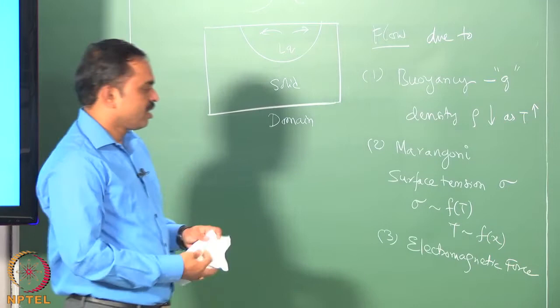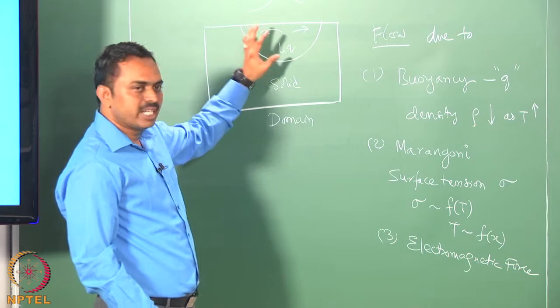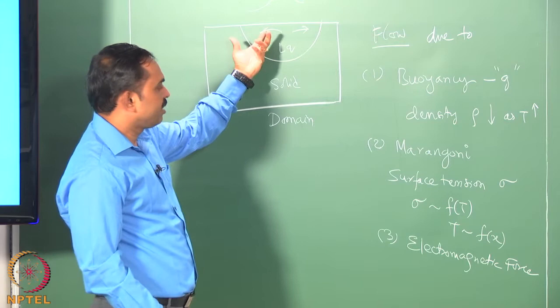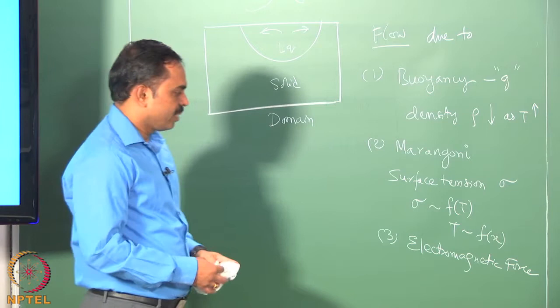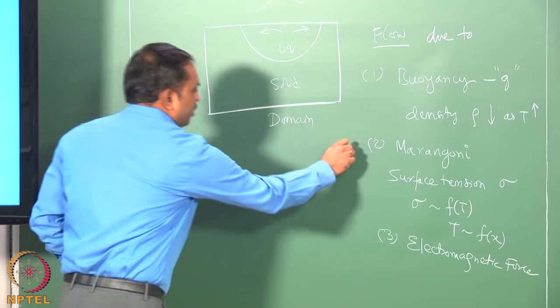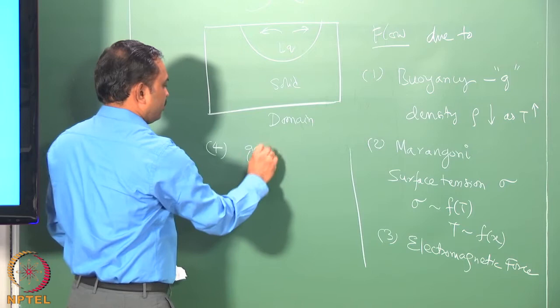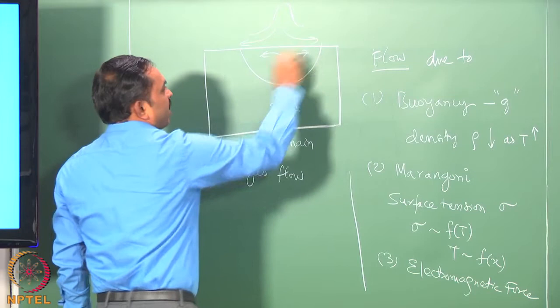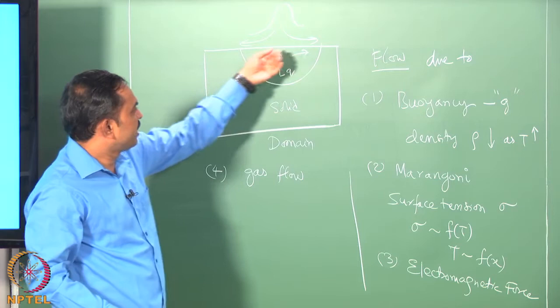The third reason would be the electromagnetic force. If you have arc melting or electron beam melting, you would have current going through the sample, and part of the sample is actually liquid which can move. Whenever you have a moving conducting body through which current is going, the current will induce a magnetic field, and coupling the magnetic field and the current direction, you would have an electromagnetic force coming in.